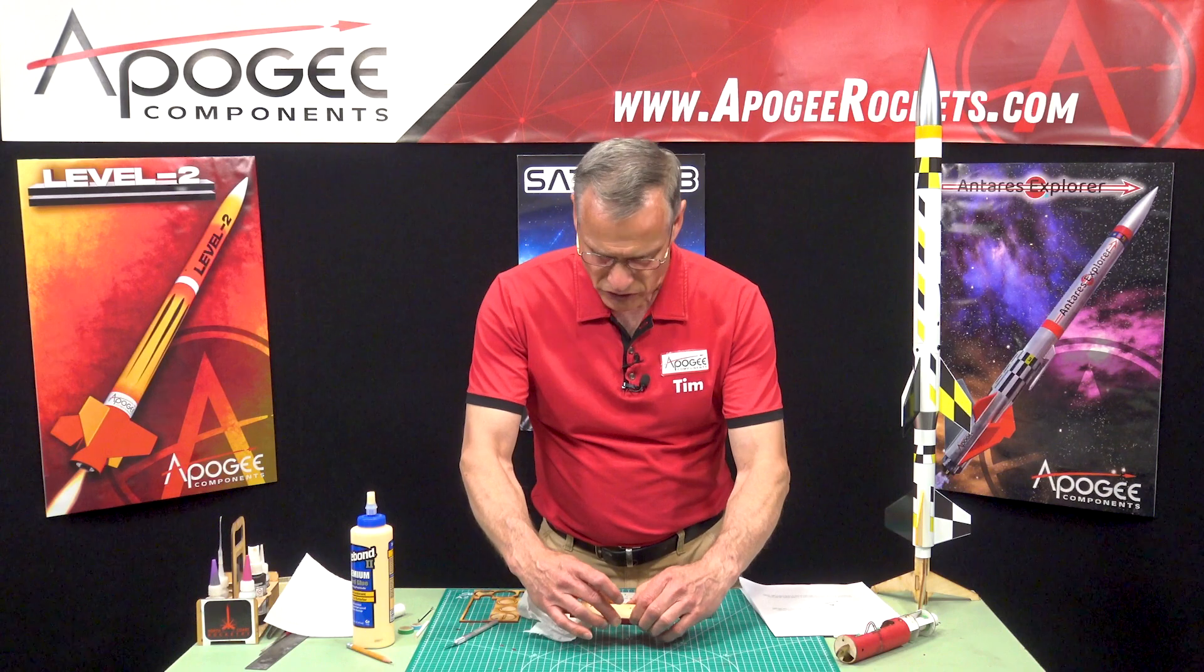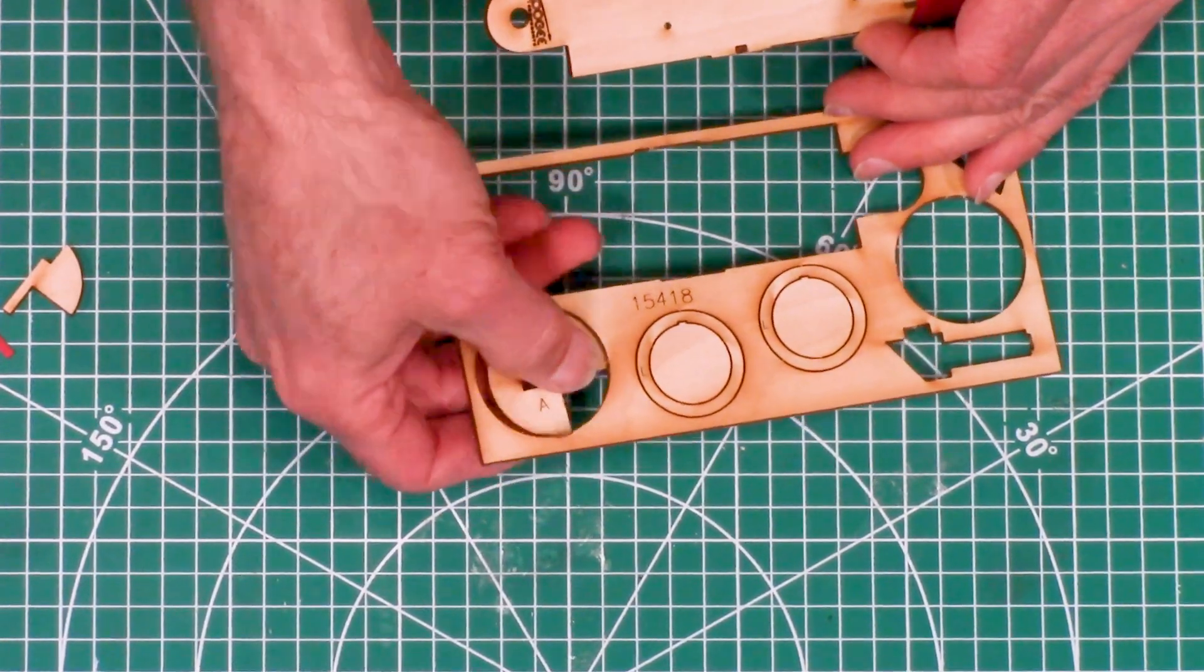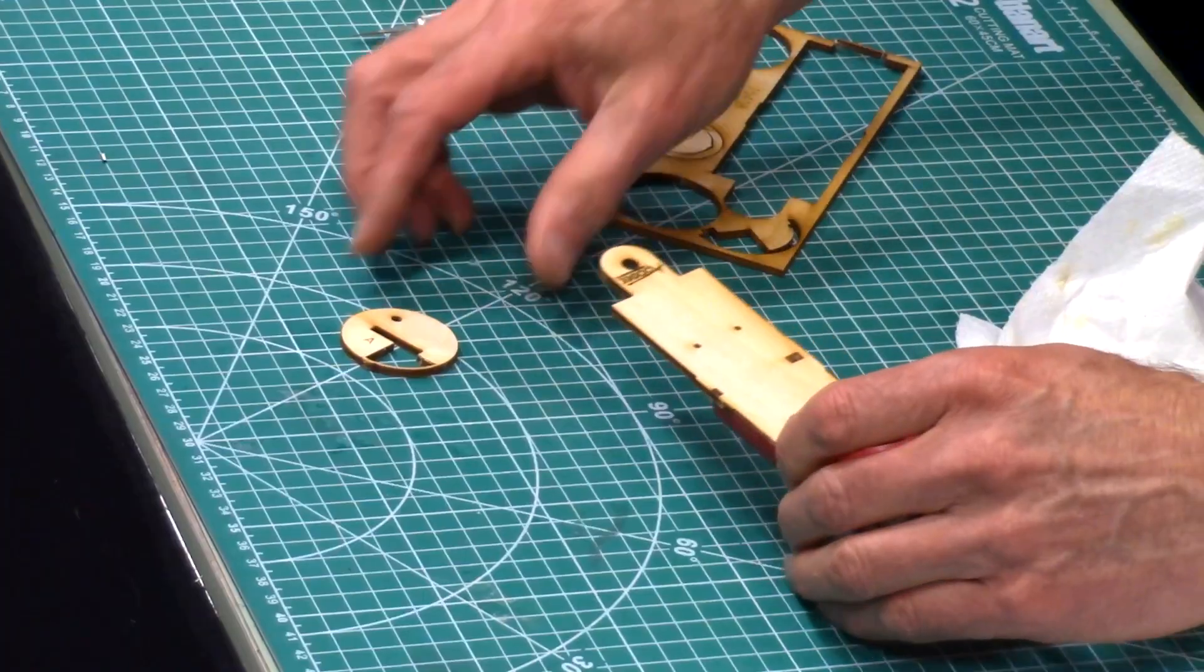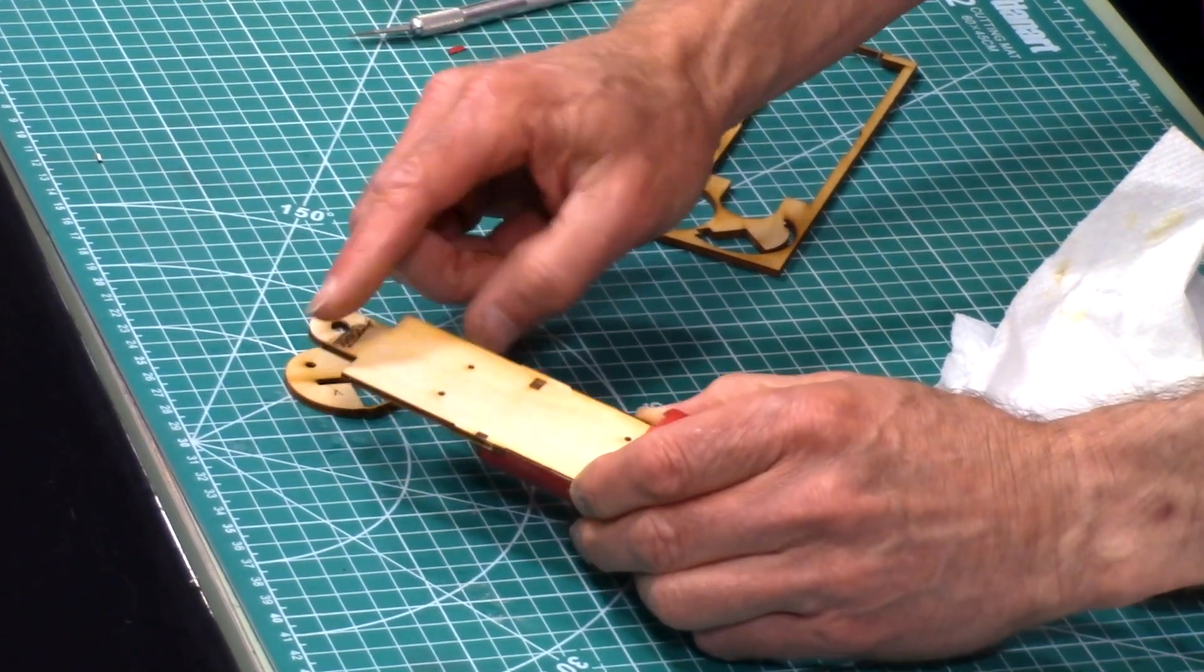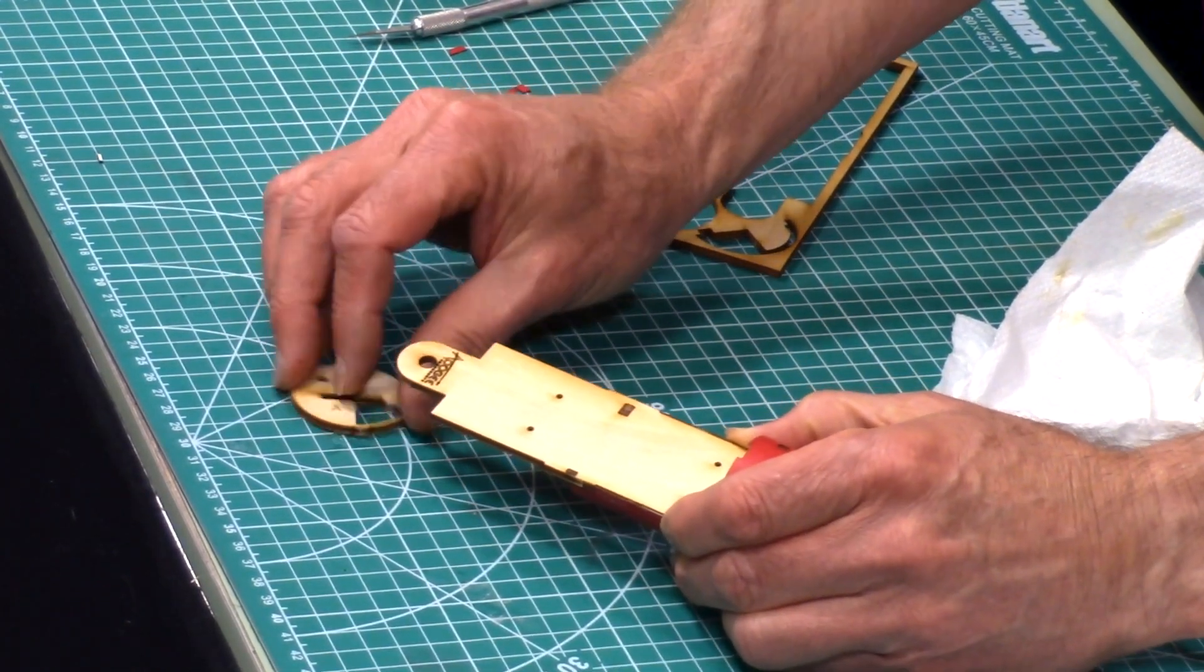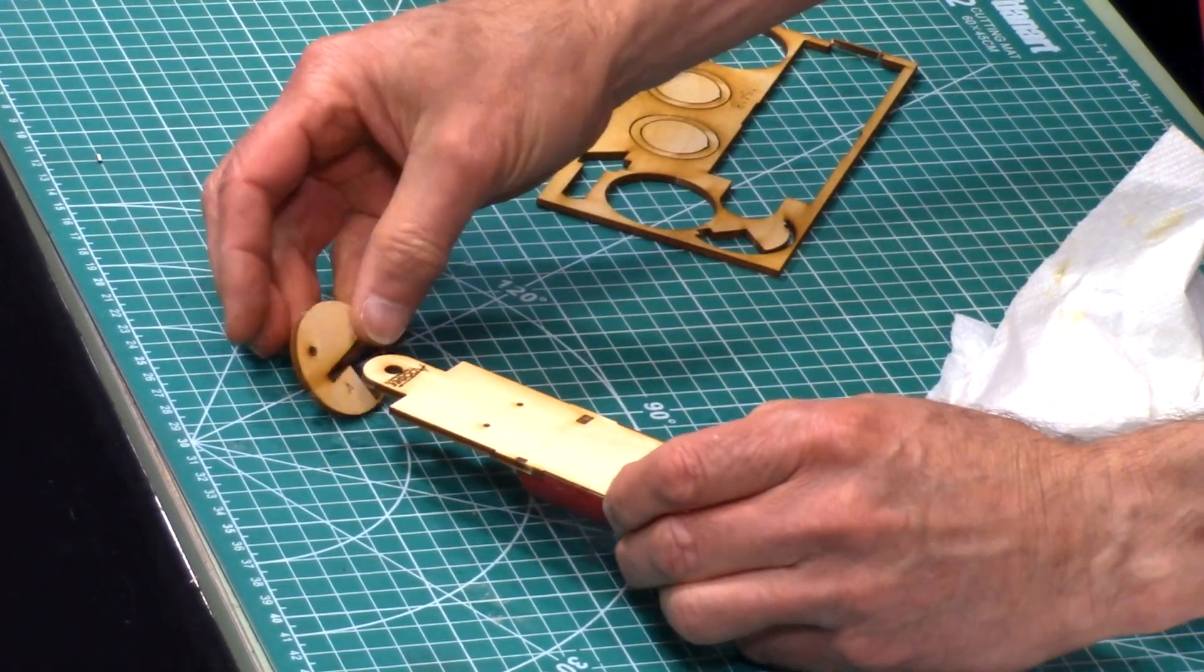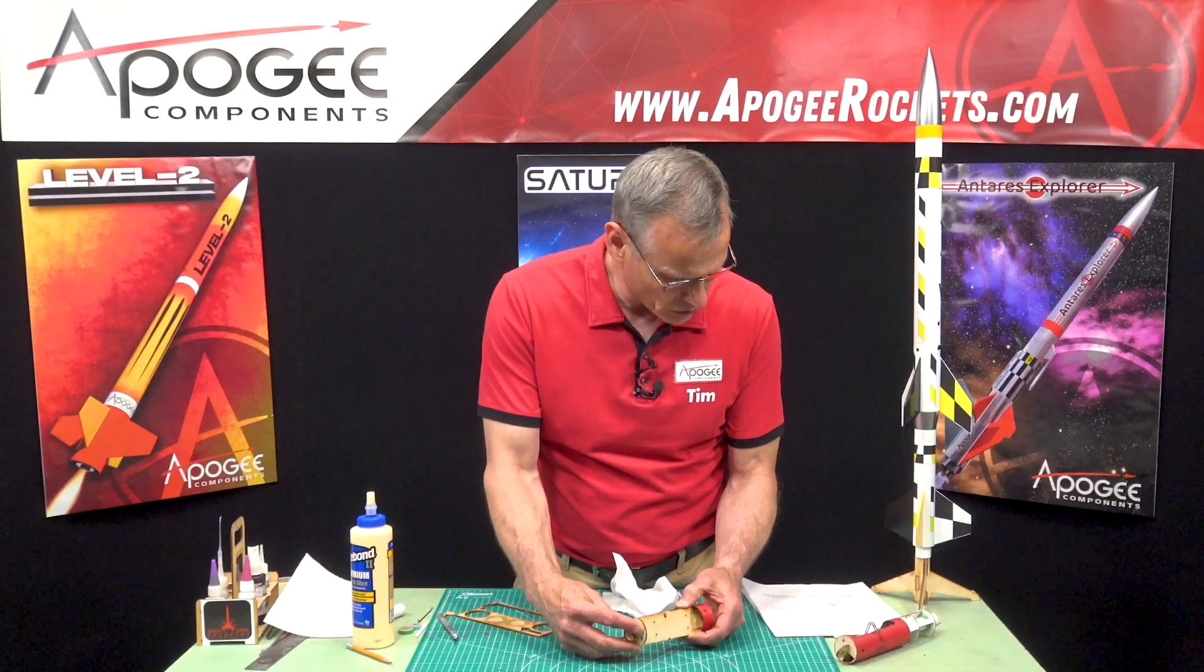Step number eight is to remove part A from the plywood sheet. I've already gone ahead and snapped it out. That is going to be glued on the forward end of the sled with the A facing towards the sled this way, just like that. That's going to get glued right there.